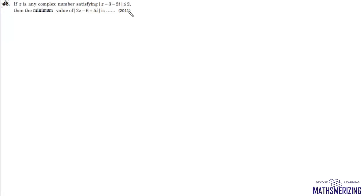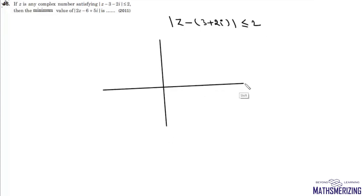The question is: if Z is any complex number and mod of Z minus (3 + 2i) is less than or equal to 2, then we need to find the minimum value of mod(2Z - 6 + 5i). First we draw this region. This region represents all the points on or inside a circle whose center is at 3 + 2i and radius equals 2 units.